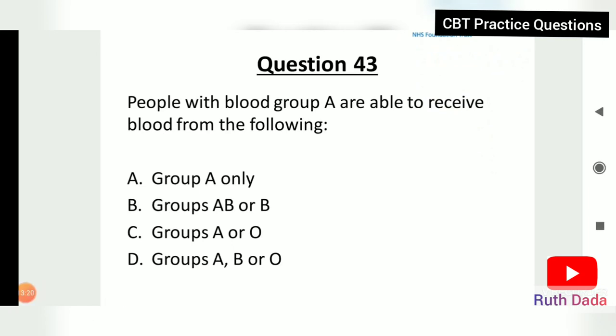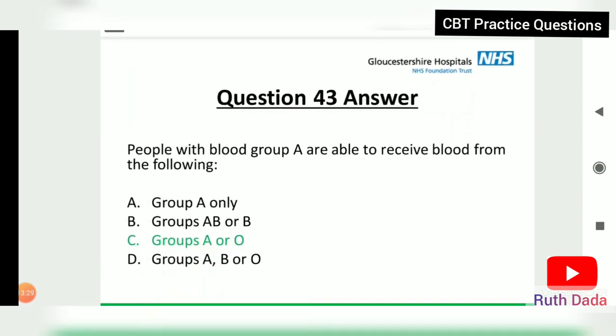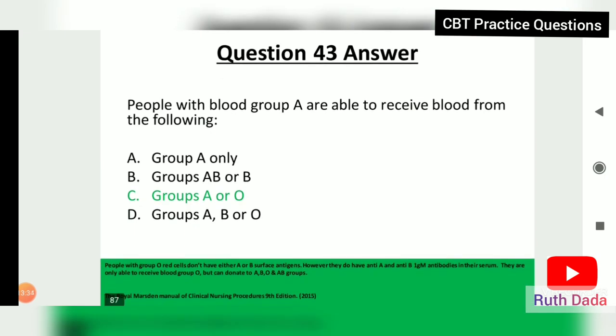Question 43: People with blood group A are able to receive blood from which groups? The answer is C, A or O. People with group O red cells don't have A or B antigens but do have anti-A and anti-B antibodies in their serum; they can only receive group O blood but can donate to A, B, O, and AB groups.